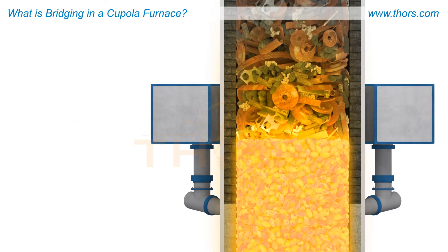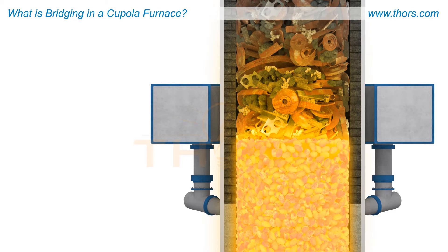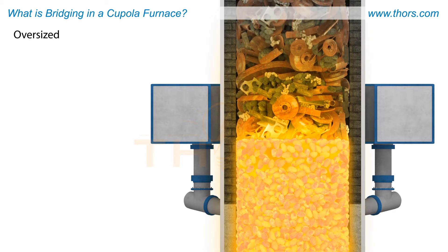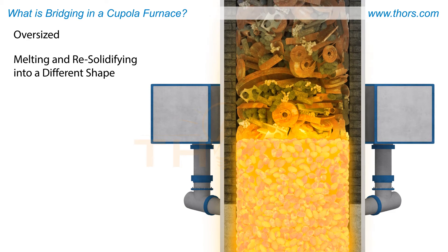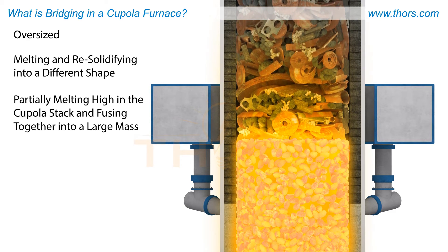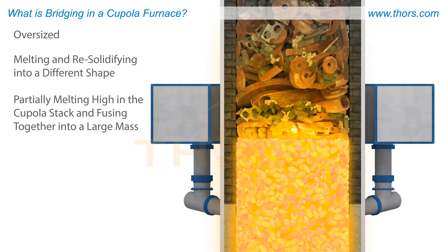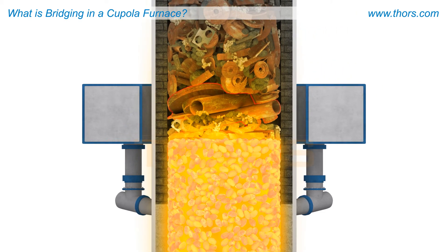Cupola bridging occurs when some metallic charge materials become lodged in the cupola stack, either by being oversized, melting and re-solidifying into a different shape, or partially melting high in the cupola stack and fusing together into a large mass. This large mass then lodges in the cupola stack, thereby resisting downward movement.